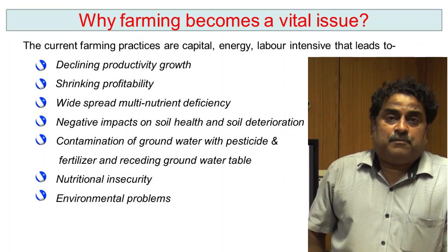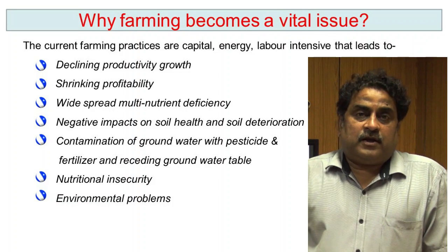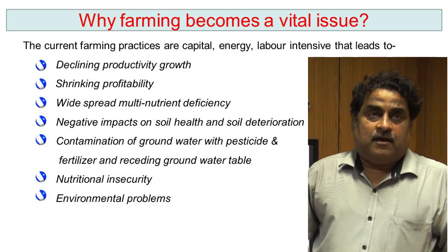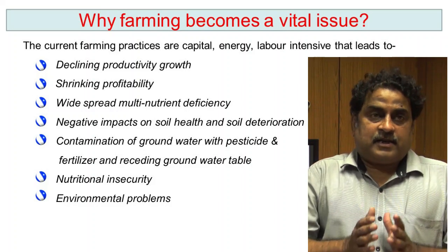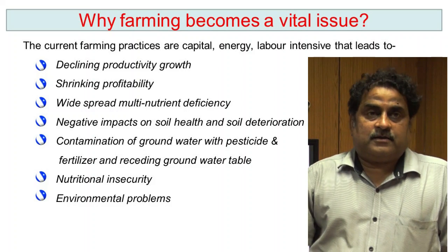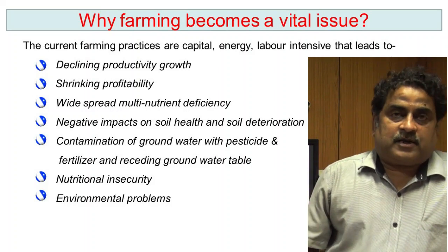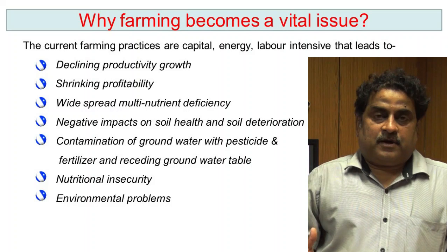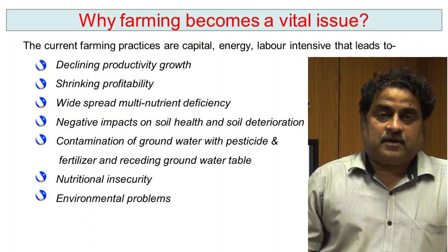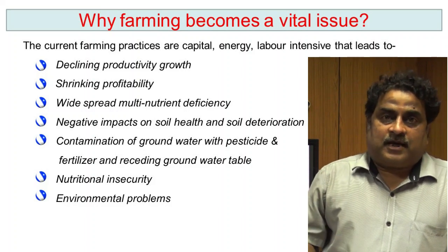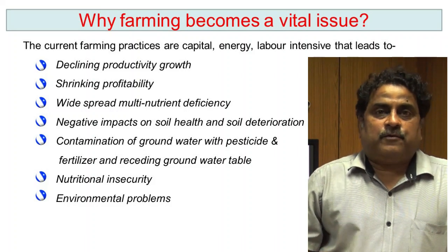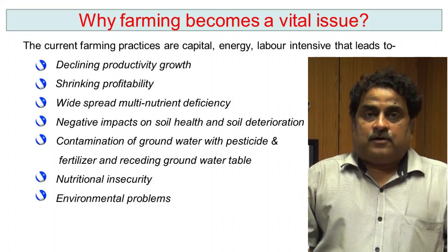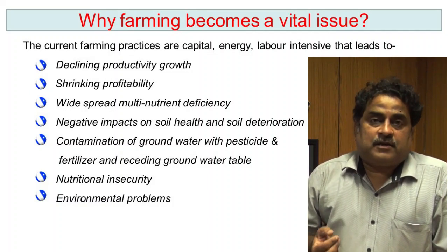As Liebig's law of minimum states, the element present in the least amount regulates the growth and development of the plant. This is similarly explained by Blackman's law of limiting factor in photosynthesis — at sunrise carbon dioxide is abundant and light is the limiting factor, while in the afternoon sunlight is high and carbon dioxide becomes the limiting factor. Similarly, in case of nutrients, the element present in the least amount regulates growth. So we have to take care of all nutrients for achieving higher productivity.